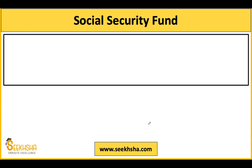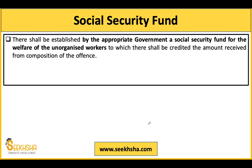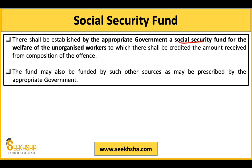There is a provision for a Social Security Fund. Whatever penalties are collected under this code by the appropriate governments will be deposited into a Social Security Fund, which the appropriate governments — meaning state governments at the state level — will create. This fund will be used for the welfare of unorganized workers. State governments can also add other resources beyond penalties to this fund.